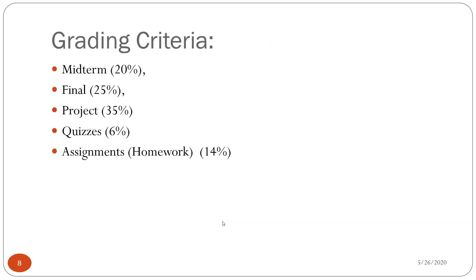The grading criteria: one midterm exam worth 20% of your final grade, one final test worth 25%, a project worth 35% — the main component — quizzes worth 6%, and homework worth 14%. Regarding the number and timing of quizzes and homeworks, please give me some time and I'll share those dates soon.